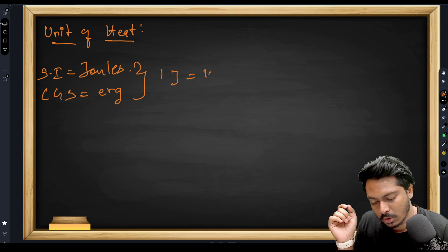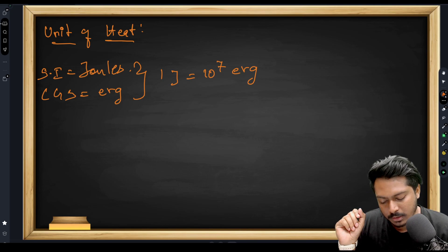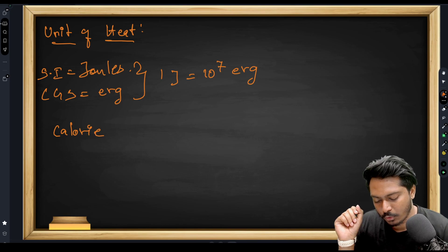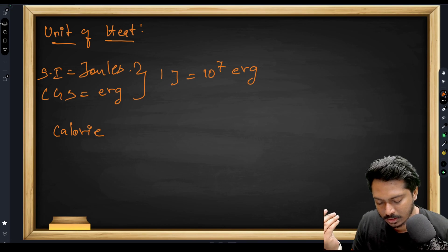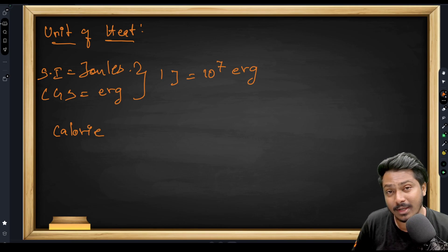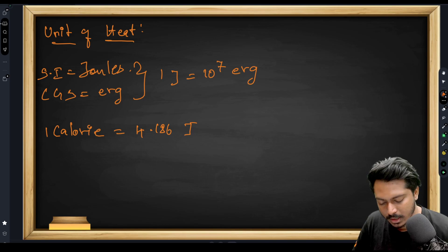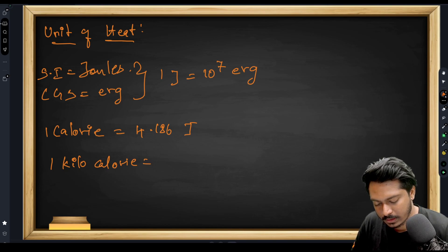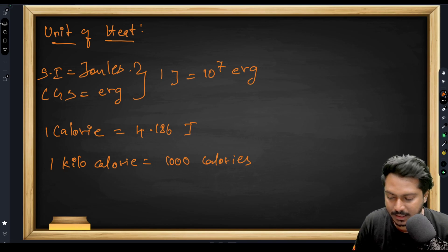Other units of heat include calorie and kilocalorie. One calorie is equal to 4.186 Joules. One kilocalorie is equal to one thousand calories. These are the units of heat.